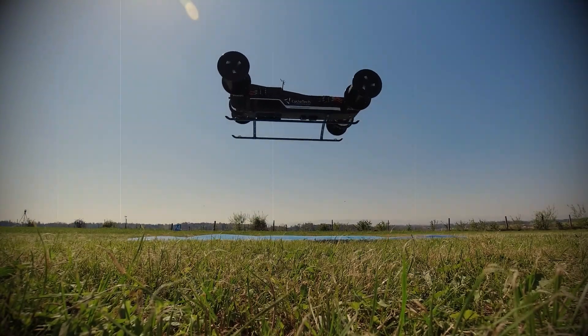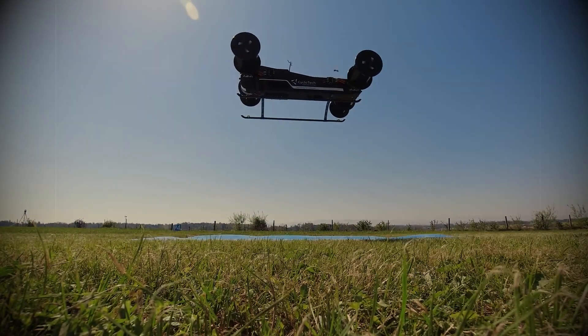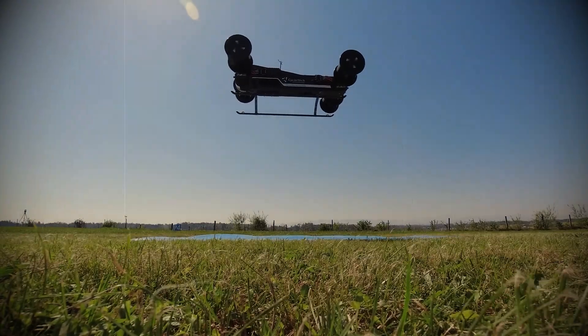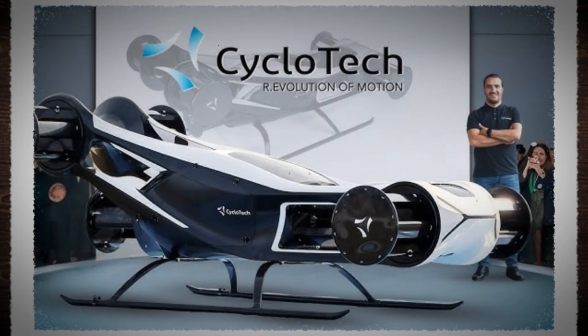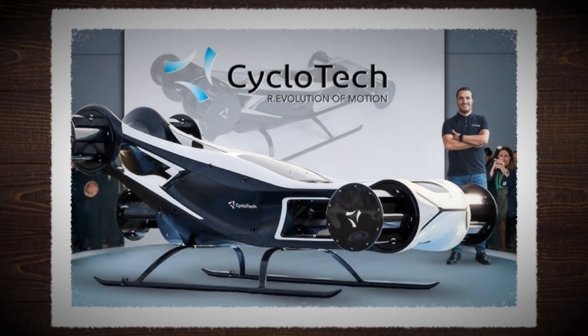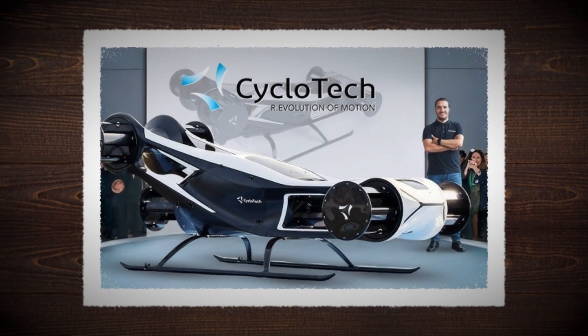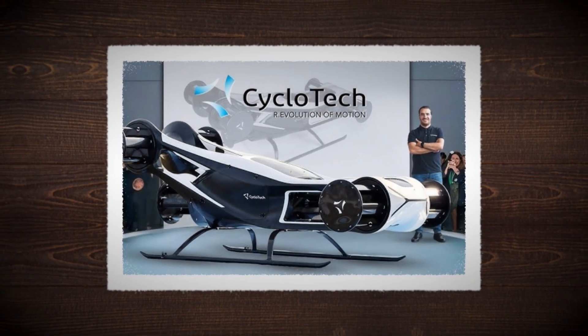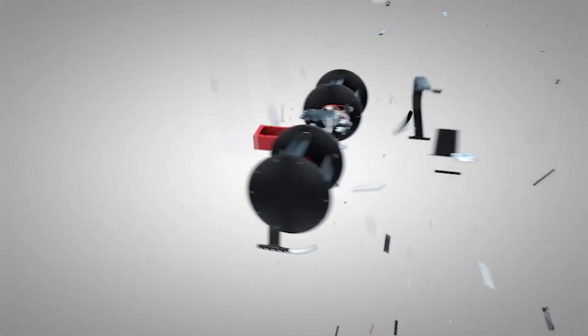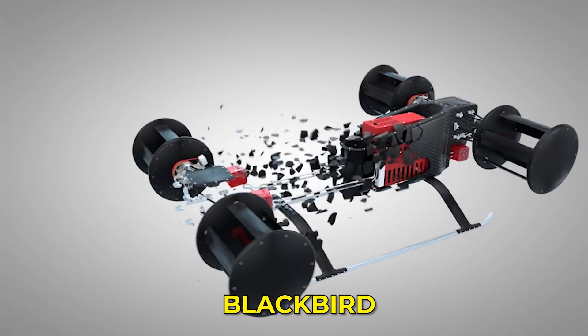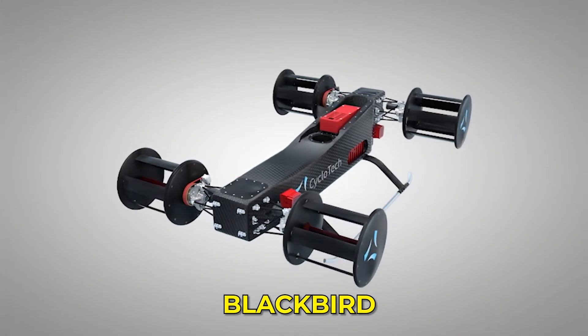But in the air, every gram matters. Adding too many moving parts makes the aircraft heavier, more complex and less efficient. That's why companies like Cyclotech have spent years refining the design using CFD and lightweight materials. Their flagship project, known as Blackbird, may be one of the most agile flying machines ever created.